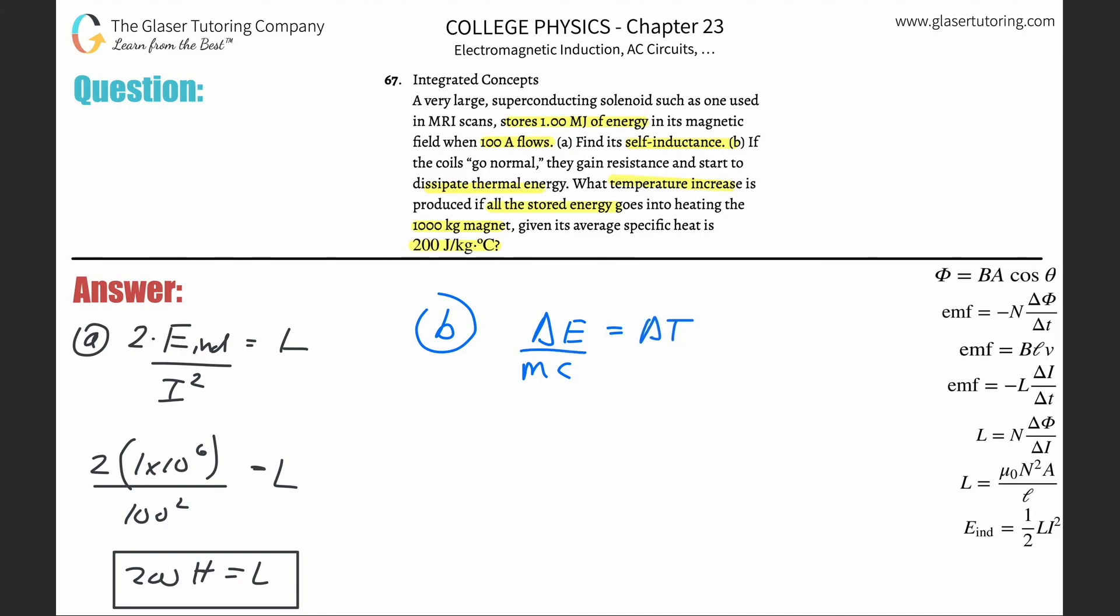All those are the proper units, so it's just a simple plug and chug. So it's going to be 1 times 10 to the sixth divided by then parenthesis 1000 times 200.